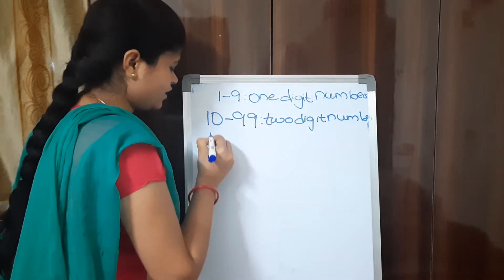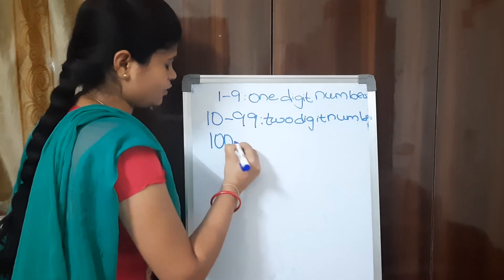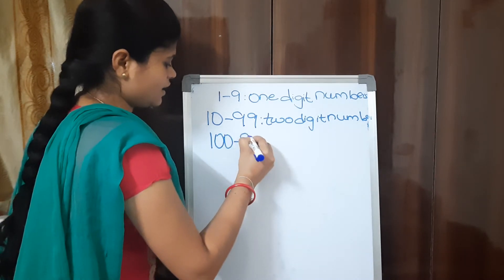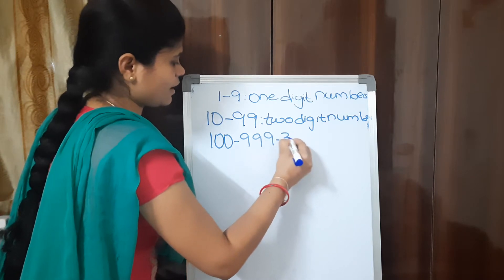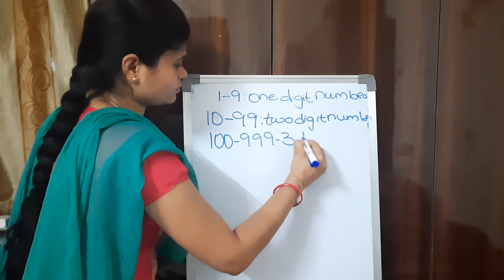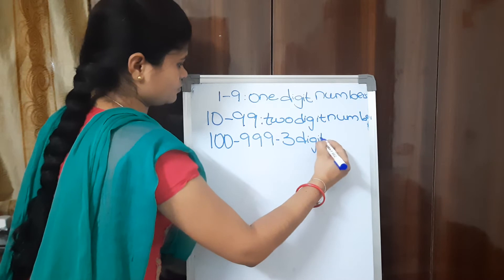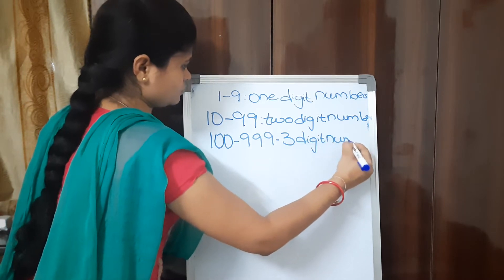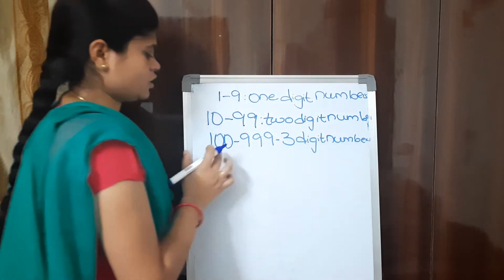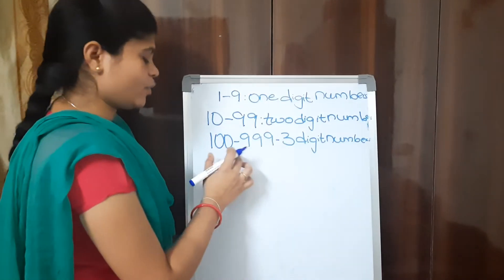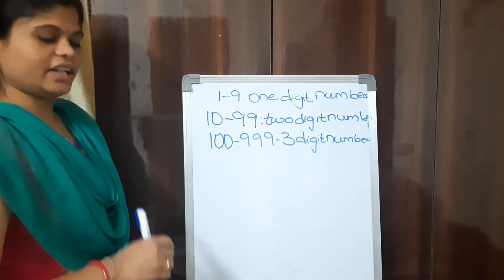Now, after 99, we have 100. Numbers from 100 to 999 are 3-digit numbers. In this class we are going to discuss about numbers from 100 to 999.